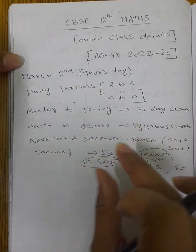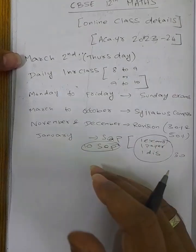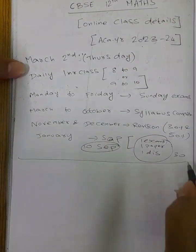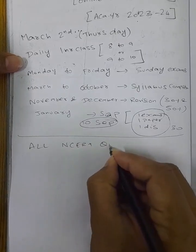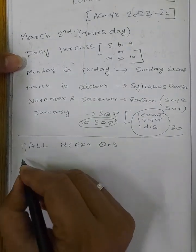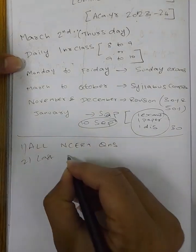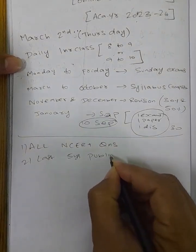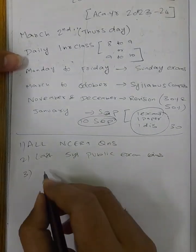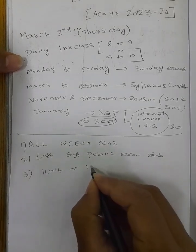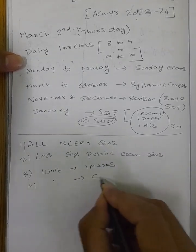In January, total board exam pattern with sample questions. Now let's discuss the NCERT questions — last 5 years public exam questions, unit by unit. Each unit, one-mark questions discussed side by side.